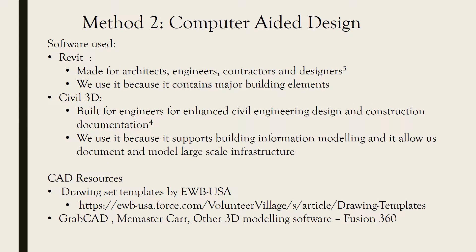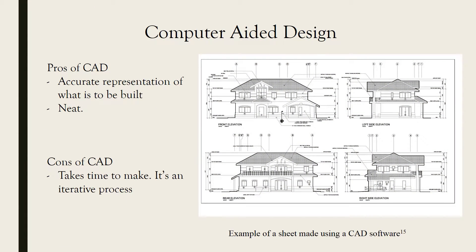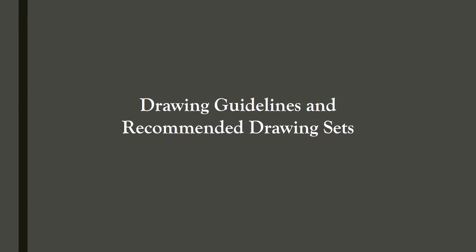Our second method of producing drawings is computer-aided design. One advantage is that you can make a very accurate presentation of what you want to build, and it produces very neat drawings — think about printed drawing sets and how clean they look. One disadvantage is that it takes time to make because it's an iterative process. Now we'll look at the drawing guidelines provided by EWB USA and some sample recommended drawing sets.